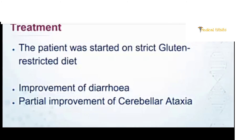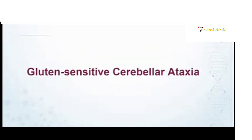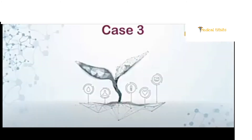The patient was started on a strict gluten-restricted diet. His diarrhea improved and after six months there was significant improvement of cerebellar ataxia. This was one of those rare cases of gluten-sensitive cerebellar ataxia.